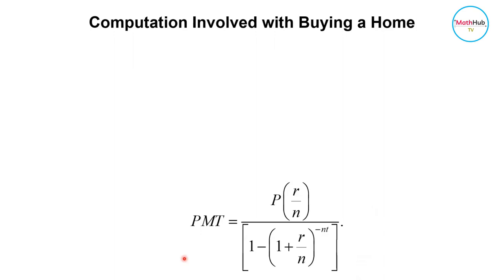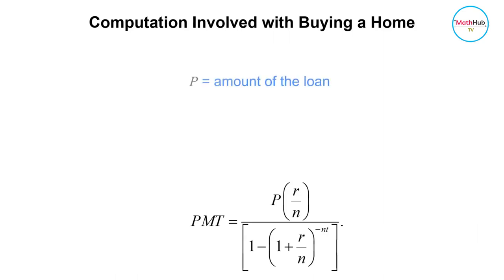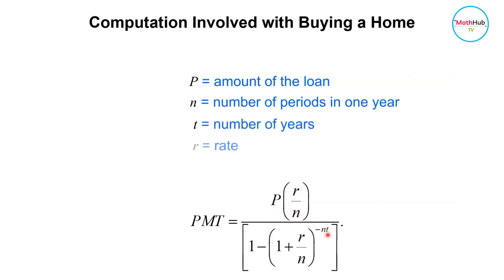The loan payment formula for fixed installment loans is given by this formula here. As you can notice, this is the same formula used to calculate the regular monthly payment when purchasing a car — it computes the regular payment amount of a P-dollar loan paid n times a year over t years with a rate of r.